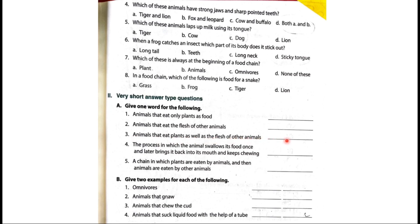Animals that eat plants as well as the flesh of other animals. Answer is omnivores. The process in which the animal swallows its food once and later brings it back into its mouth and keeps chewing. The answer is chewing the cud.